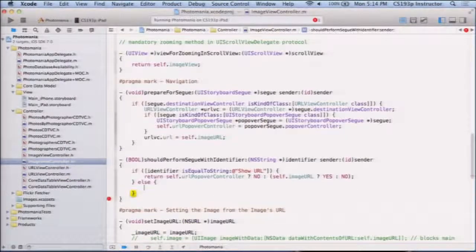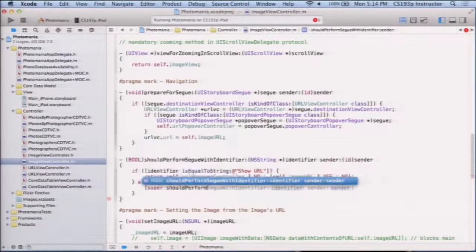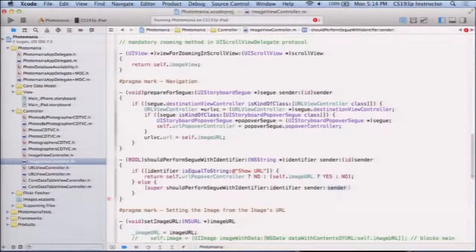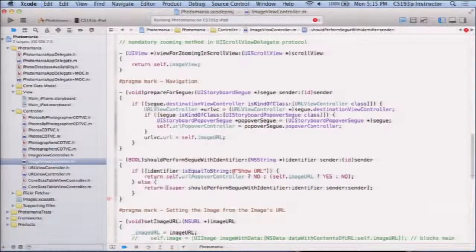Else, now this is interesting. I have an else case here which is super should perform. So if I'm not preventing it, then I'm going to let my super class, UIViewController, decide whether it should do this segue, which it's always going to say yes pretty much. This should be returned. So let's see if that fixes all our problems.